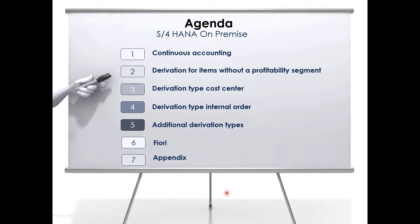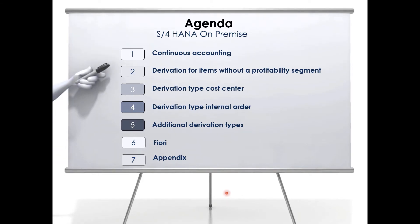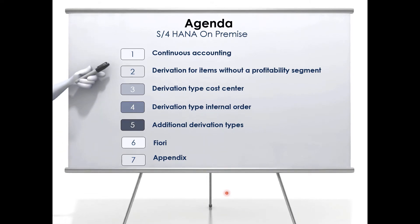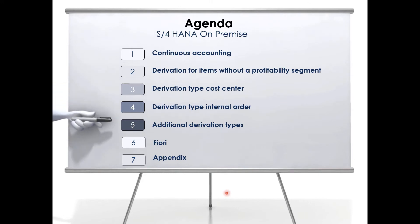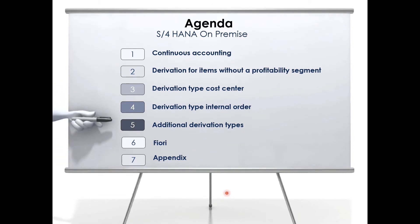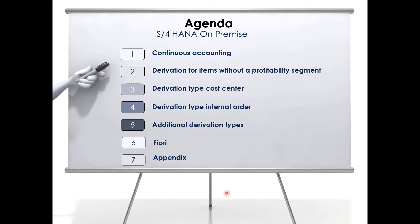Our topics for today are going to cover continuous accounting. We'll talk a little bit about what SAP intends for us to do there, and this tool called Derivation for Items Without a Profitability Segment. Before we get too detailed, I'm going to explain what a profitability segment's purpose is. Then I'll give you a use case — an example of how we might use this in a cost center situation, and the same with an internal order. We'll also cover remaining derivation types and tips on Fiori, how we can see these new dimensions in a Fiori report.